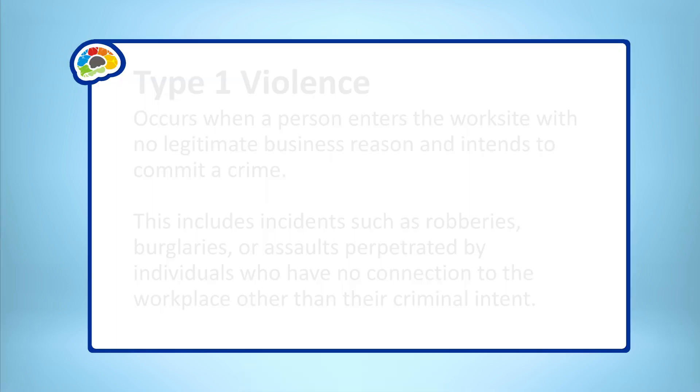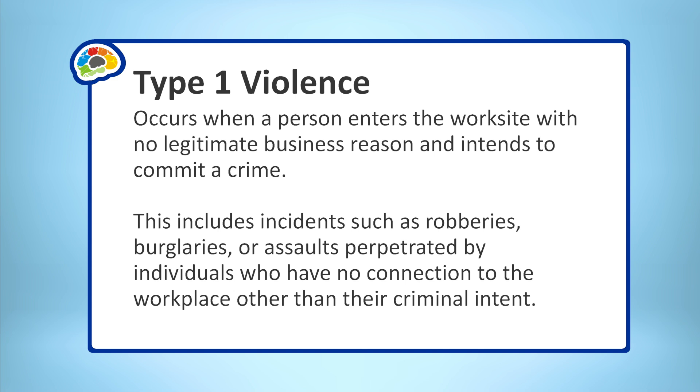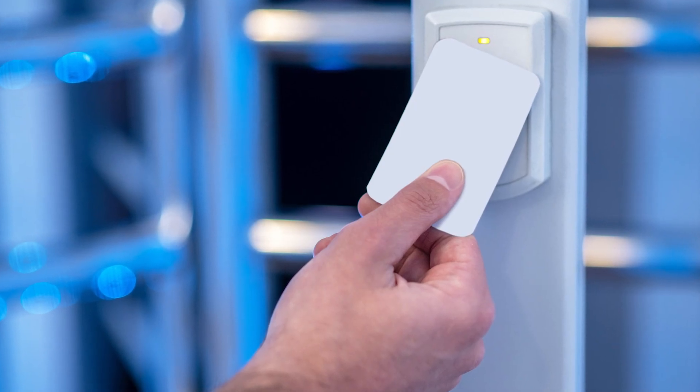There are four main types of workplace violence. Each type represents a distinct category and has its own unique characteristics and challenges. Type 1 violence occurs when a person enters the worksite with no legitimate business reason and intends to commit a crime. This includes incidents such as robberies, burglaries, or assaults perpetrated by individuals who have no connection to the workplace other than their criminal intent. To help prevent Type 1 violence, employers should implement security measures such as access controls, surveillance cameras, and employee training specific to this type of violence.